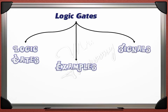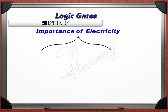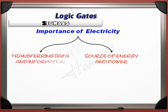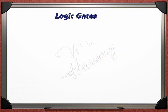The last part of the lecture is about signals. Electricity is used for two purposes: most commonly as a source of energy and power (like electricity in your home), and secondly for transferring data and information — for example, in telephone, radio, television, and the internet. In both uses, the word 'signal' refers to voltage. In energy use the voltage is high, while in data transfer the signal voltage is very low — sometimes in millivolts or even smaller.